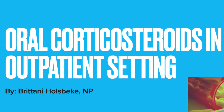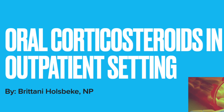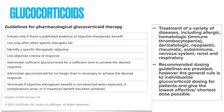So today we'll make sure to discuss both the benefits and risks in using the oral glucocorticoids. This chart here is from UpToDate and it offers some general guidelines when prescribing glucocorticoid therapy. The first guideline is: initiate only if there's published evidence of objective therapeutic benefit. Has research shown it to be beneficial when using steroids with whatever diagnosis this patient has? These are questions we need to be asking ourselves before prescribing steroids.